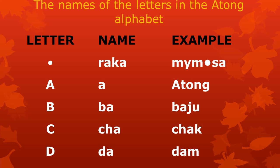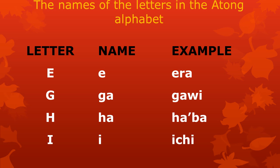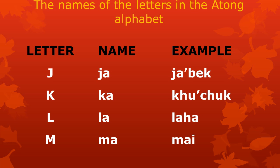I will now read the names of each letter with its example word. Just read and listen. Here I go: Atong Ba Baju Ca Cak Da Dam E Ira Ga Gawi H Hakba I Ichi Ja Jabek K Kucub La.